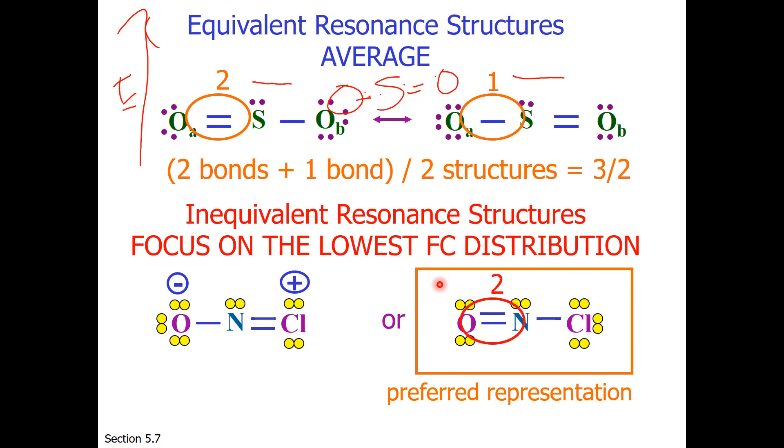So in NOCl, the bond order is 2. And if you'd like, instead of averaging the bonds over the bonding regions, you can average over structures. For the top one, I have 2 bonds plus 1 bond divided by 2 possible structures to give me a bond order of 1.5.